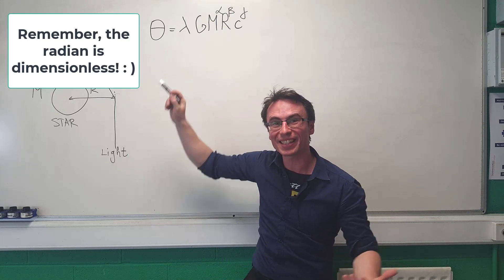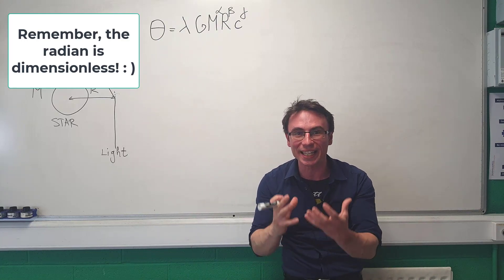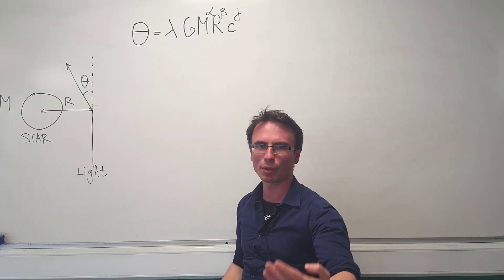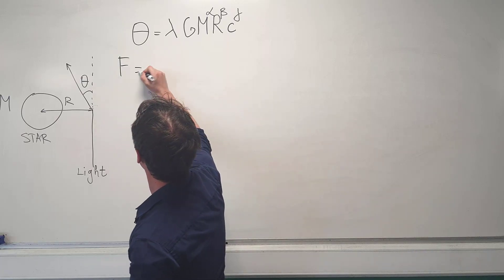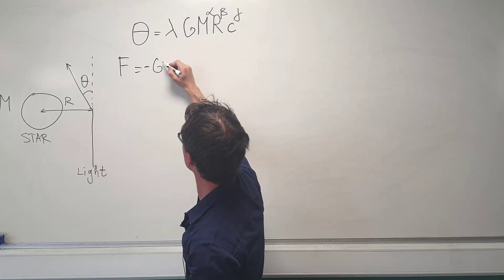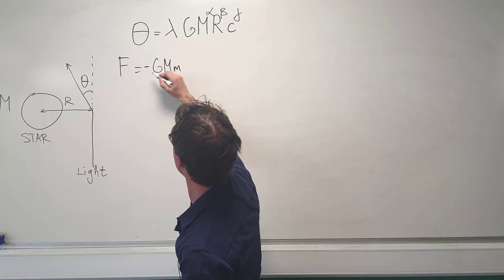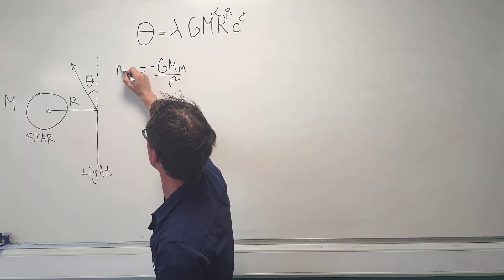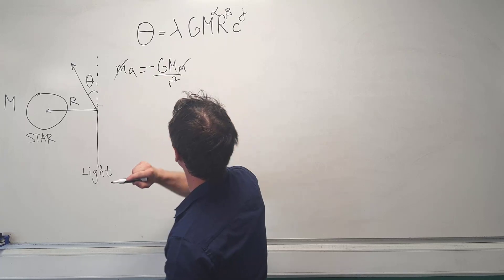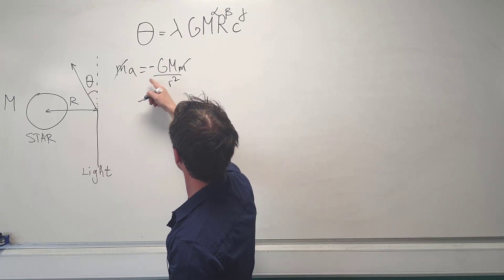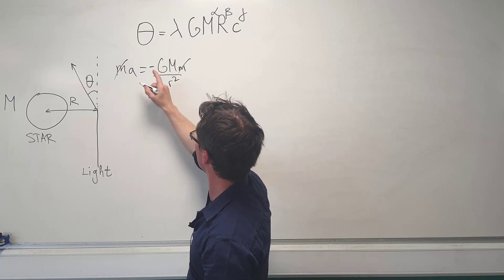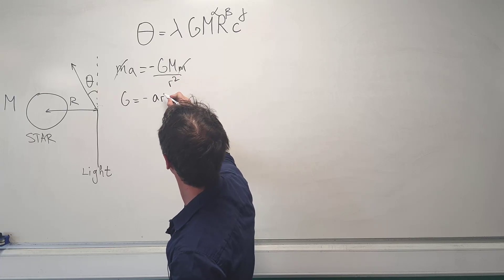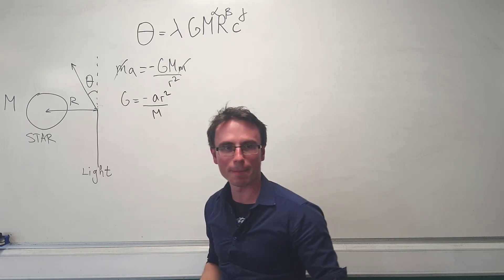The left-hand side of this equation has no dimensions. To determine the dimensions of the gravitational constant G, we can use Newton's law of universal gravitation: F = GMm/r². Replacing F with mass times acceleration and simplifying, we get that a = -GM/r², meaning G = -ar²/m.